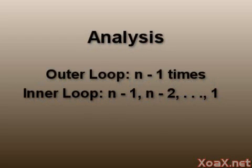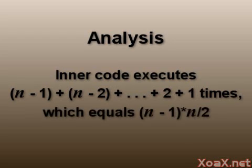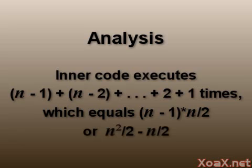The outer loop executes n-1 times, and the inner loop executes n-1 times, then n-2 times, and so on down to 1 corresponding to each outer loop. So the inner code is executed a total of n-1 plus n-2 plus n-3 down to 1 times. This sums to (n-1) times n divided by 2, or n² divided by 2 minus n divided by 2.